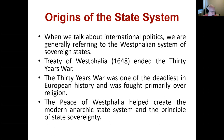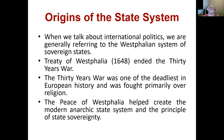So where does the state system come from? When we talk about international politics, we're generally referring to the Westphalian system of sovereign states. The Treaty of Westphalia in 1648 ended the Thirty Years' War, which was one of the deadliest wars in European history and was fought primarily over religion. Before then, you had some sense of countries, but more like feudal — you had different kings, but you also had the church interfering in politics. There were fights between political entities and religious entities that were also political. The Peace of Westphalia helped create the modern anarchic state system and the principle of state sovereignty.